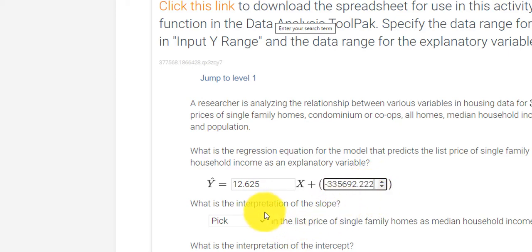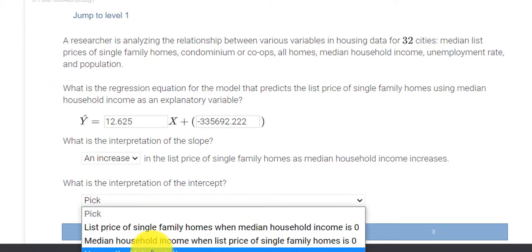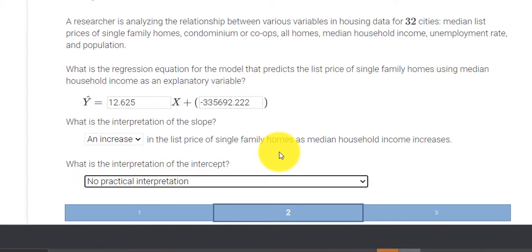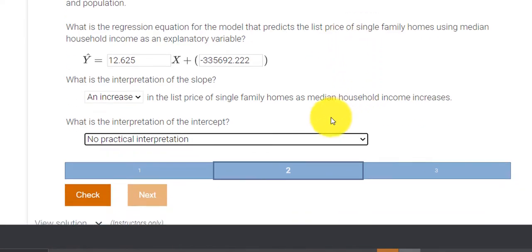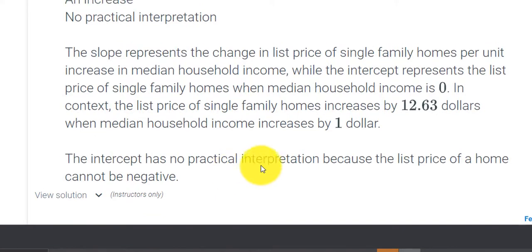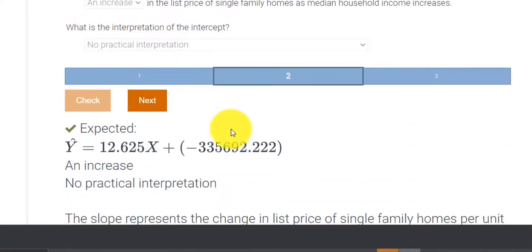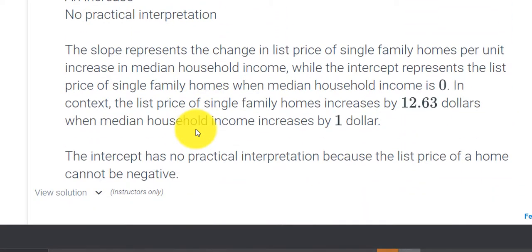And the interpretation of the slope. Well, since the slope is positive, it looks like there's an increase in the list price of single family homes as the median income increases. If this was negative, we'd say a decrease. And then interpretation of the intercept, there is no practical interpretation because we can't have a value of the home that's zero. I'm going to press check answer. And no red marks. So that means we got everything correctly.